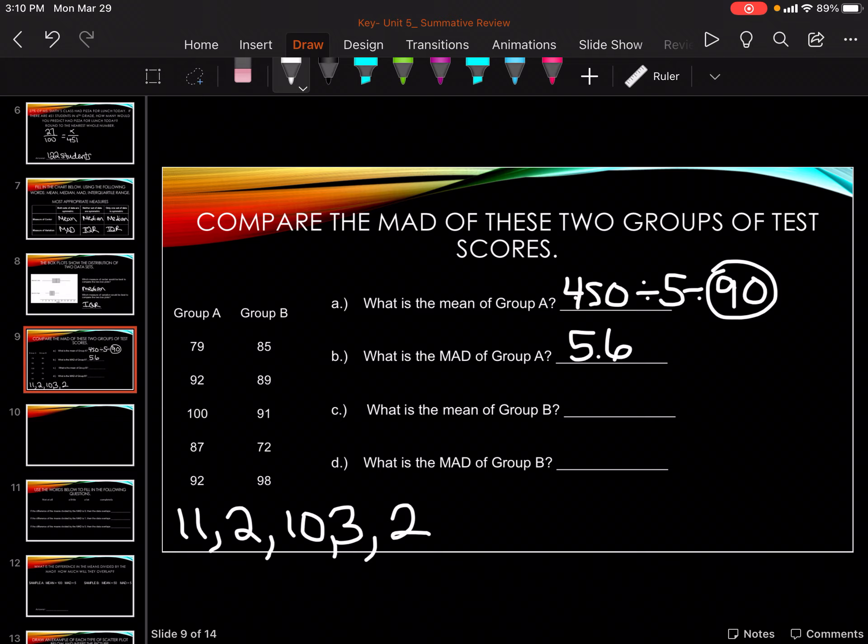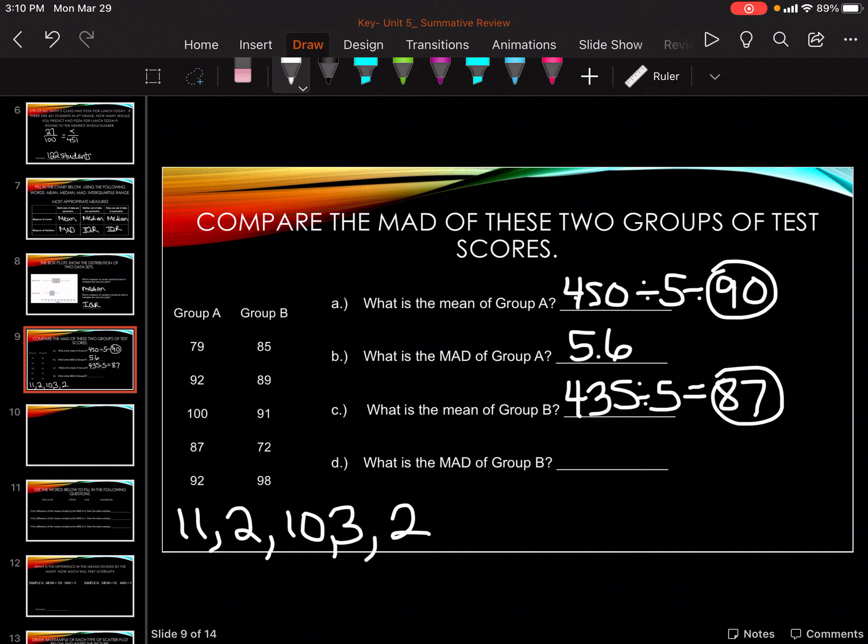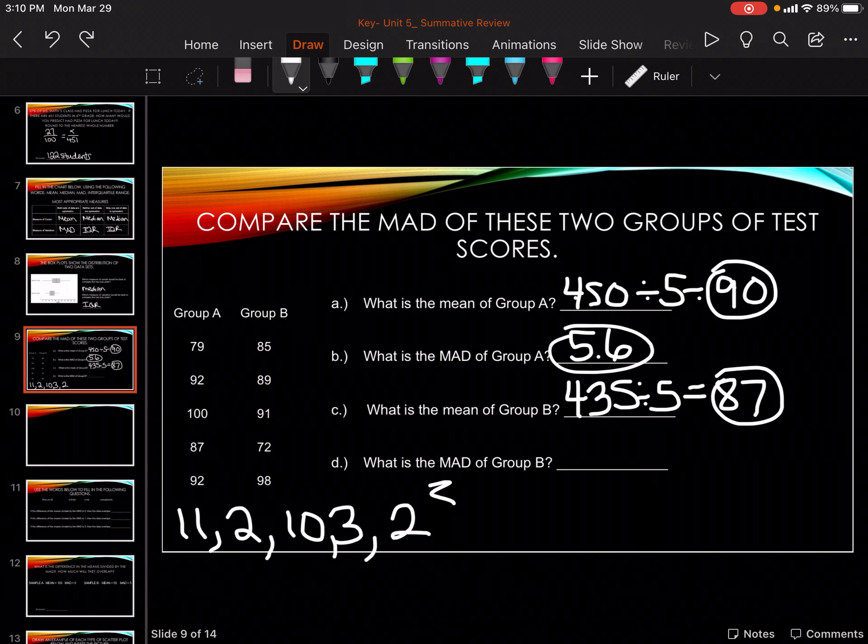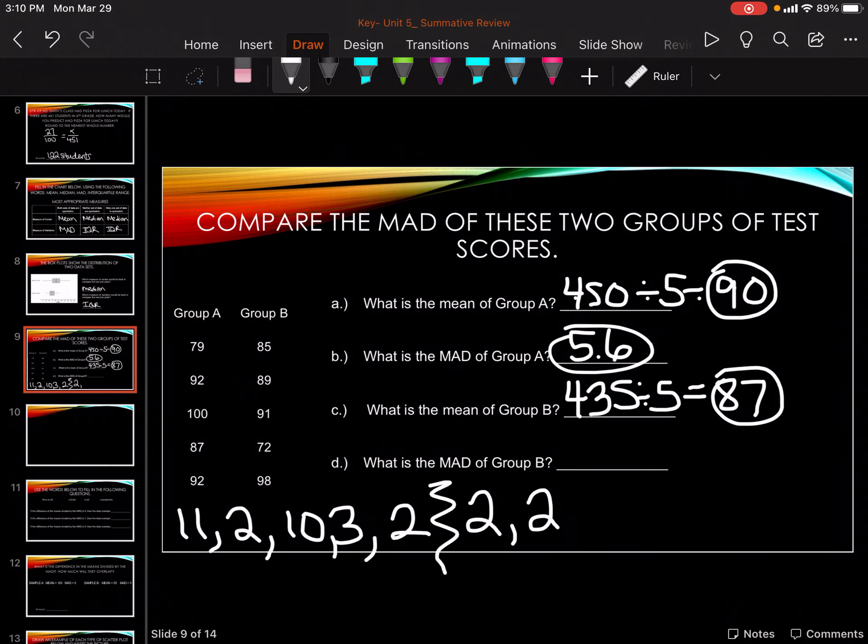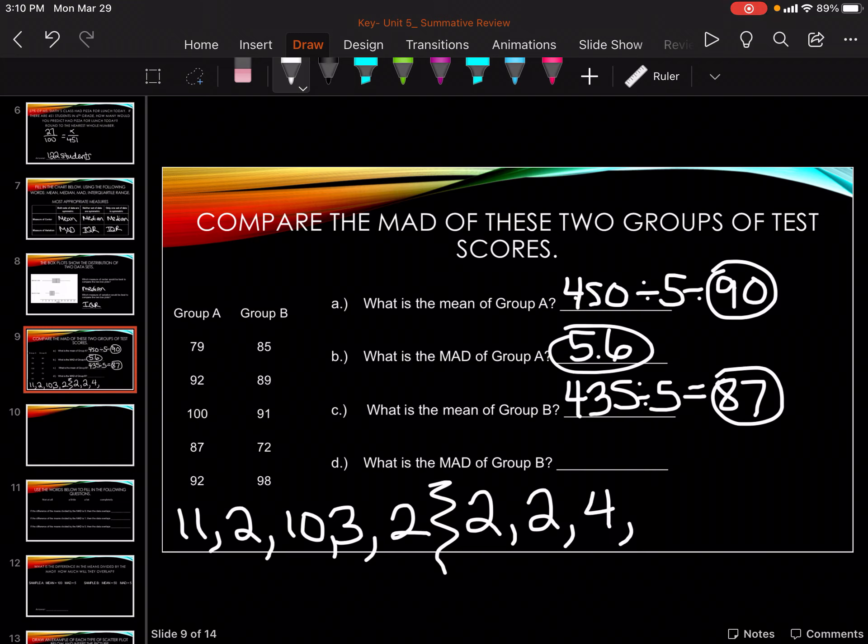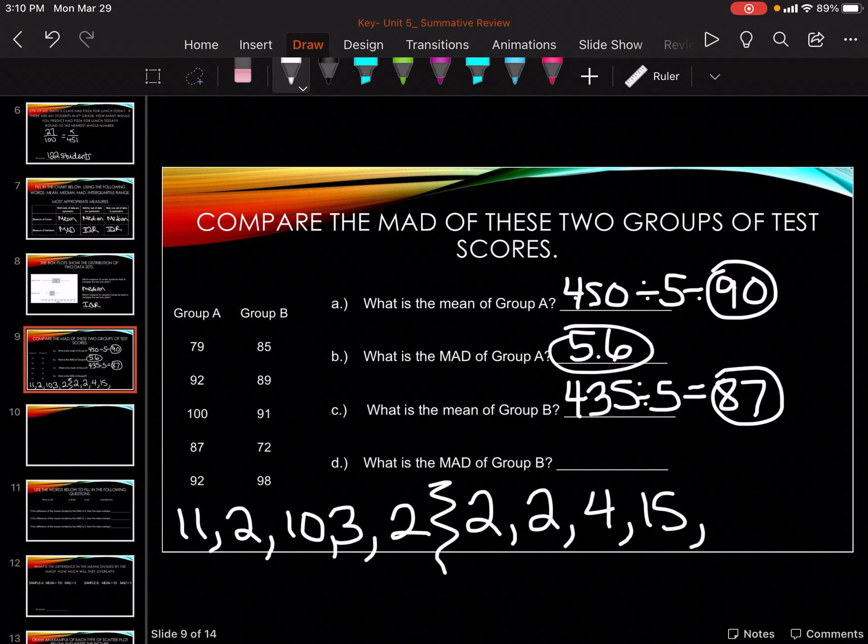Let's do Group B. 85 plus 89 plus 91, 72 plus 98, 435 divided by 5 gets me 87. Okay, so let's see how far it is away. Okay, so it's 2, 2, 4, 87 minus 72, 15, 98 minus 87, 11. 2 plus 2 plus 4 plus 15 plus 11 divided by 5 gives me 6.8.